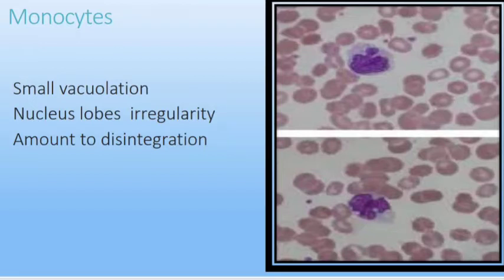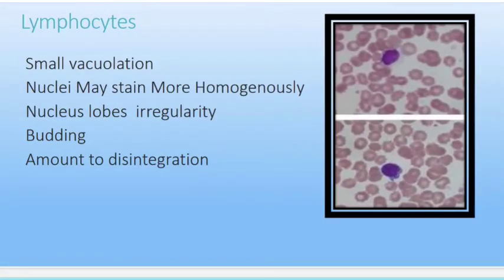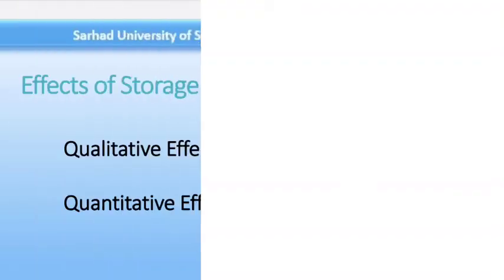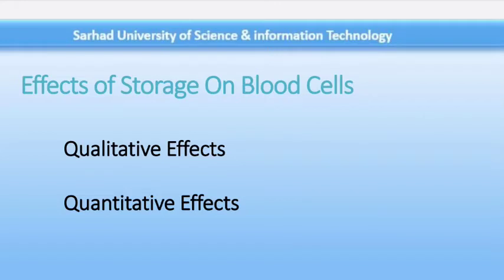Lymphocytes undergo similar changes. A few vacuoles may be seen in the cytoplasm, and nuclei stain more homogeneously than usual. In some cells, the nucleus undergoes budding, giving rise to nuclei with two or three lobes. These changes must be distinguished from apoptosis, which is natural cell degradation owing to programmed cell death. These were the changes observed in white blood cells: neutrophils, lymphocytes, and monocytes.